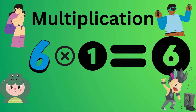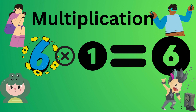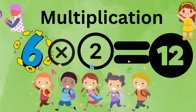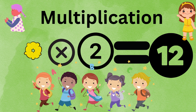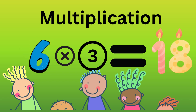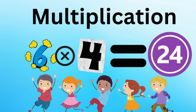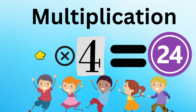6 multiplied by 1 equals to 6. 6 multiplied by 2 equals to 12. 6 multiplied by 3 equals to 18. 6 multiplied by 4 equals to 24.